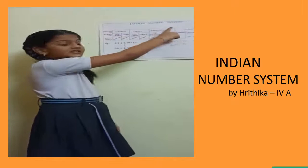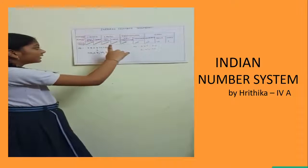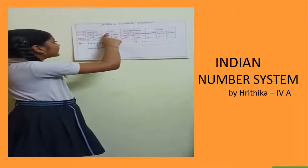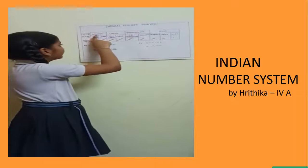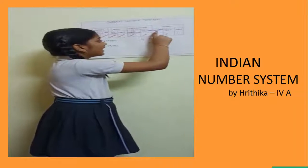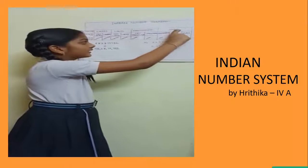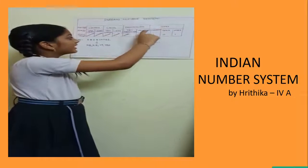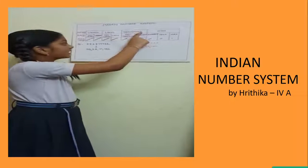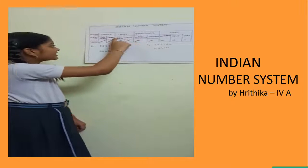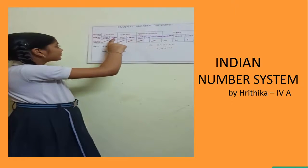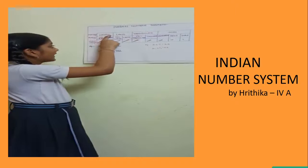In the Indian number system, places are grouped into periods: ones period, thousands period, lakhs period, and crores period. Coming from the right: ones place, tens place, hundreds place — grouped as ones period. Thousands place, ten-thousands place — grouped as thousands period. Lakhs place, ten lakhs place — grouped as lakhs period. Crores place, ten crores place — grouped as crores period.